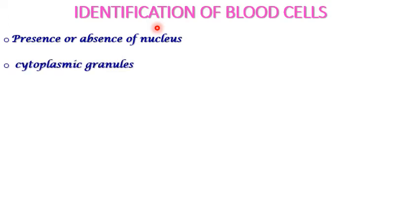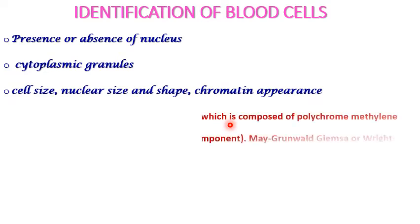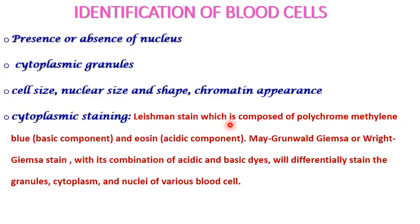The presence or absence of a nucleus — whether the blood cell contains a nucleus or not — can help identify the blood cell. There will also be certain granules present inside the cells, and depending upon those granules you can identify the blood cells. Cell size, nuclear size, and shape are also criteria that play a very important role in differentiating or identifying blood cells. Another way to identify blood cells is by a staining technique.